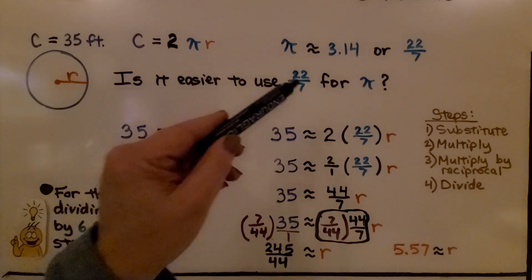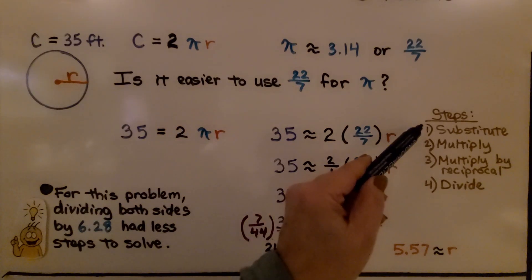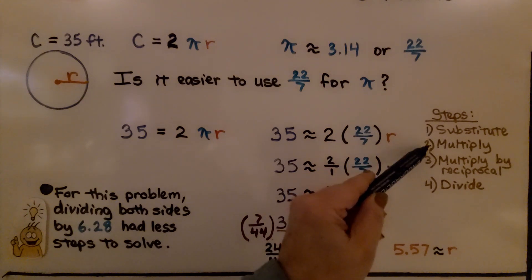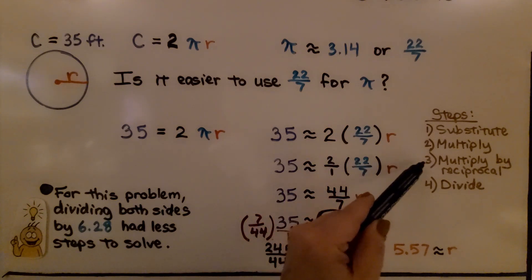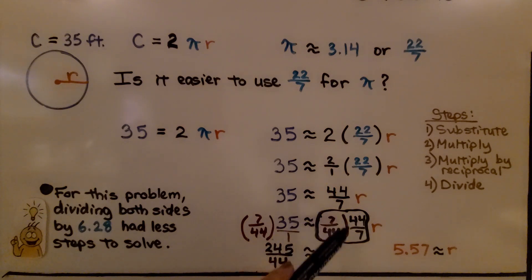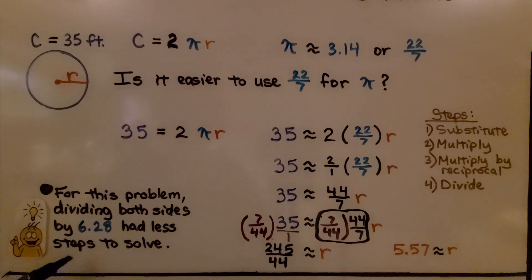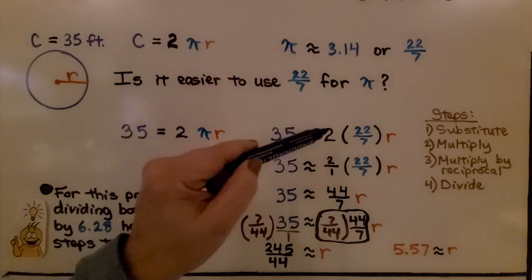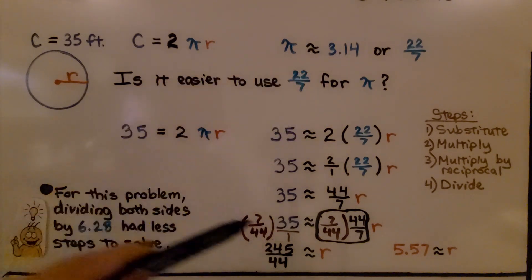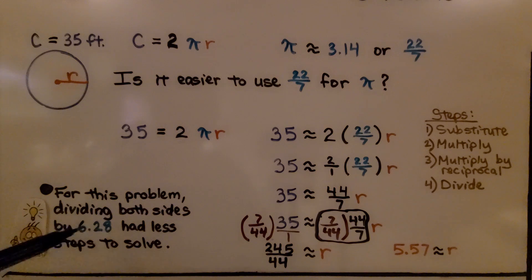Using 22/7, we had to substitute, multiply, multiply by the reciprocal, then divide — four steps. For this problem, using 3.14 and multiplying by 2 first to get 6.28, then dividing both sides by 6.28, had fewer steps. Either way we get the correct answer, but using 6.28 is much quicker.